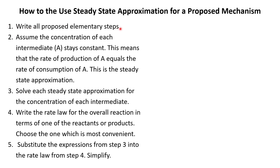First, we need to write all the proposed elementary steps — this is a pretty obvious starting place. Second, we need to assume that the concentration of each intermediate, which we'll call A, stays constant. This means the rate of production of A equals the rate of consumption of A, and this is the steady state approximation — we're assuming the concentration stays steady.